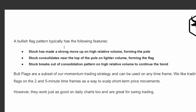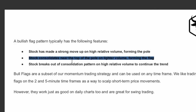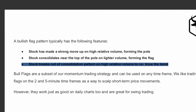A bullish flag pattern typically has the following features. The stock has made a strong upward move on high relative volume. High relative volume is pretty much the overall demand for the stock. If it has high relative volume, that's going to cause spike gaps — the stock is going to gap up, forming a pole, because flags have a pole that holds the flag up. The stock then consolidates on top on lighter volume, forming the flag, which cools the stock down before it gets more relative volume. Then the stock breaks out of consolidation on high relative volume and continues the trend.